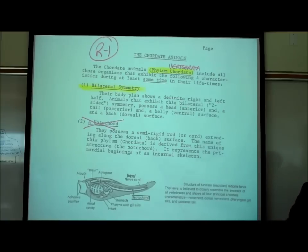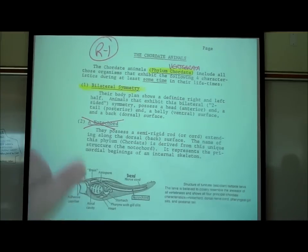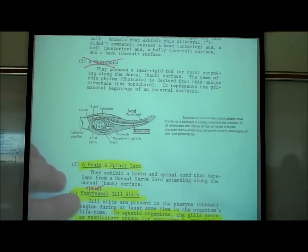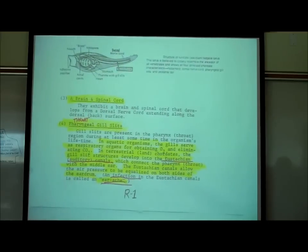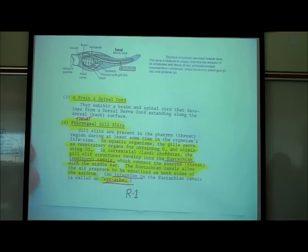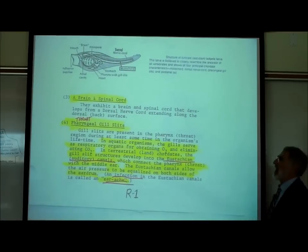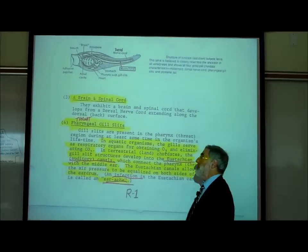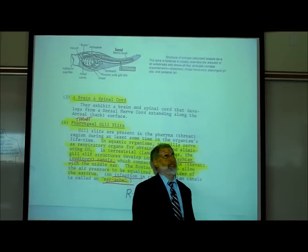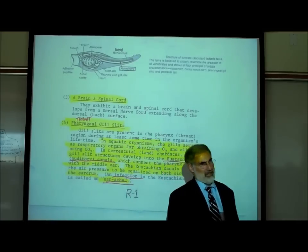We're bilaterally symmetrical. We're going to skip what a notochord is. Vertebrate animals, including us, have a brain and spinal cord. And vertebrate animals, including us, have pharyngeal gill slits.